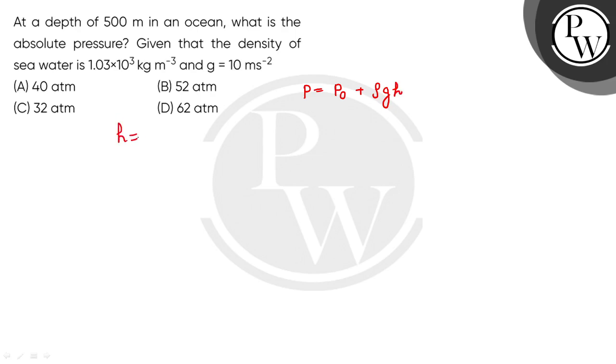How much is the value? 500 meters. ρ's value is 1.03×10³ kg/m³, g value is 10 m/s².